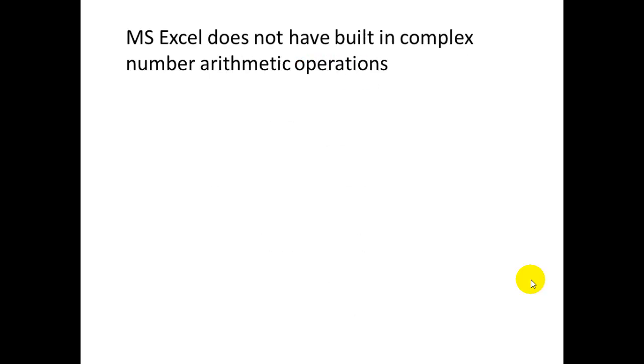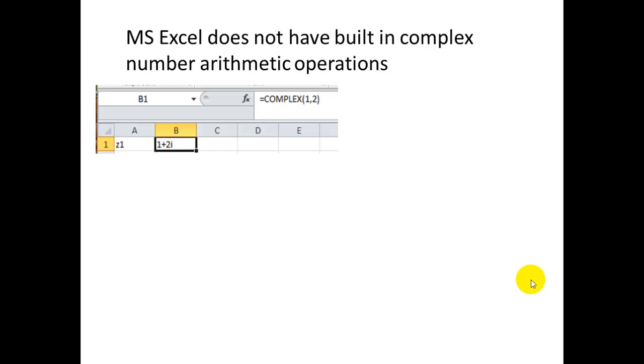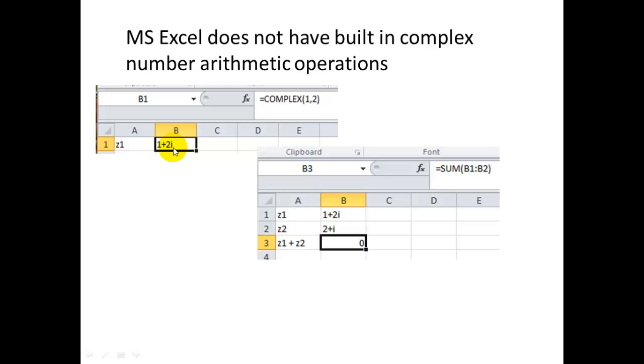Microsoft Excel doesn't have built-in complex number arithmetic operations, although you can declare complex numbers. For example, to write 1+2i, in the formula bar type =COMPLEX(1,2) and hit enter to get 1+2i. Likewise, another complex number z₂ = COMPLEX(2,1) would give 2+i.